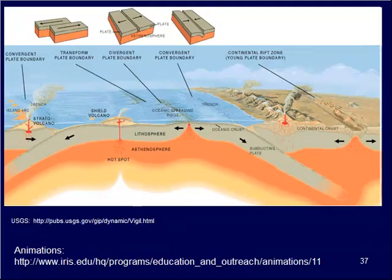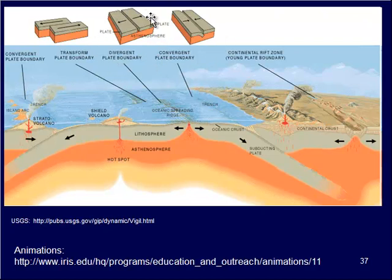Some of these different plate boundaries we can see on the Earth's surface: we have convergent, where we have two plates colliding; we have divergent plate boundaries, where plates are moving apart — those are usually at the center of our oceans; and then we have transform plate boundaries, where they're sliding horizontally past one another. Those are our main plate boundaries that we see in the ocean basin.